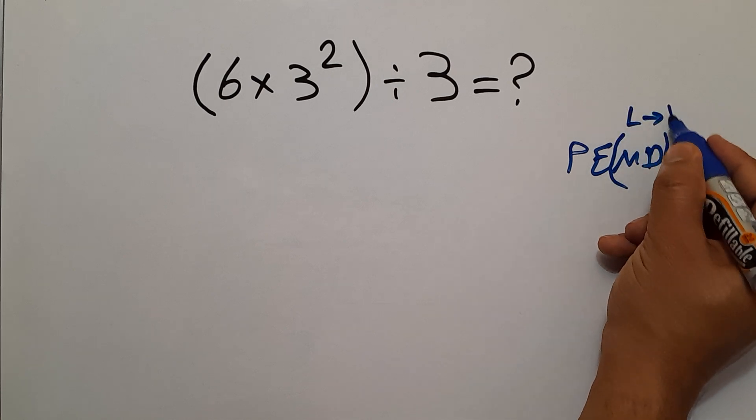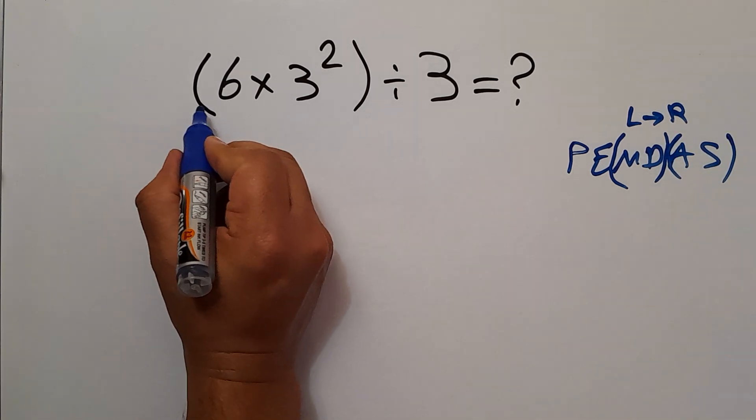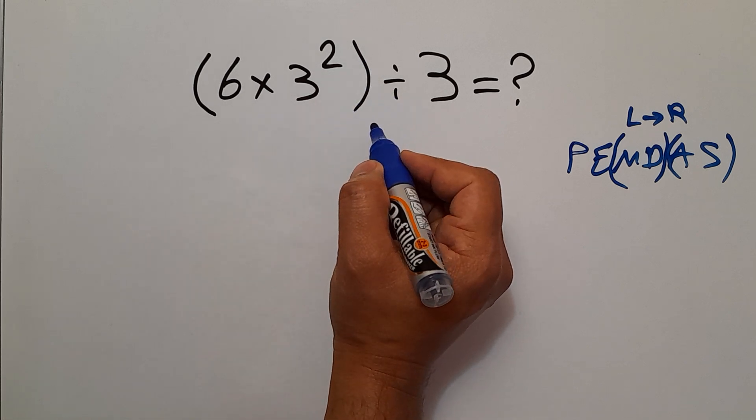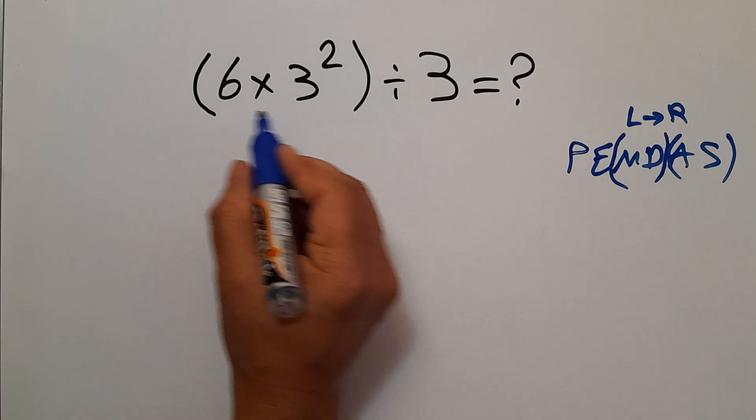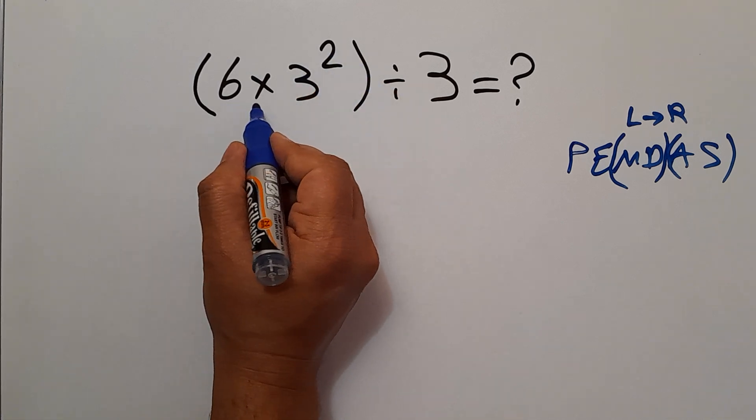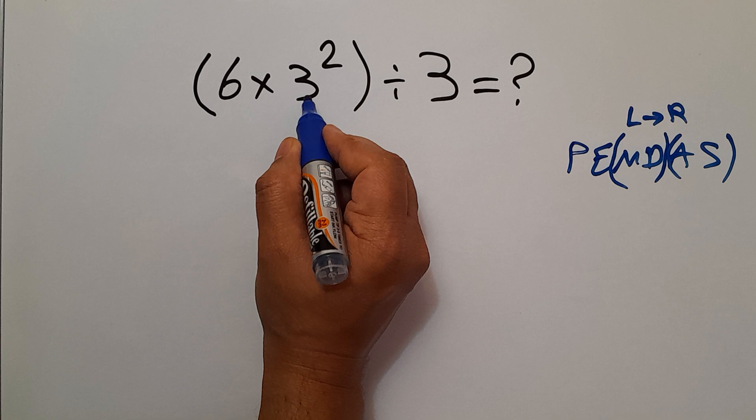In this expression we have these parentheses and this division. According to PEMDAS, first we have to handle these parentheses. Inside the parentheses we have this multiplication and this exponent. First we do 3 squared.